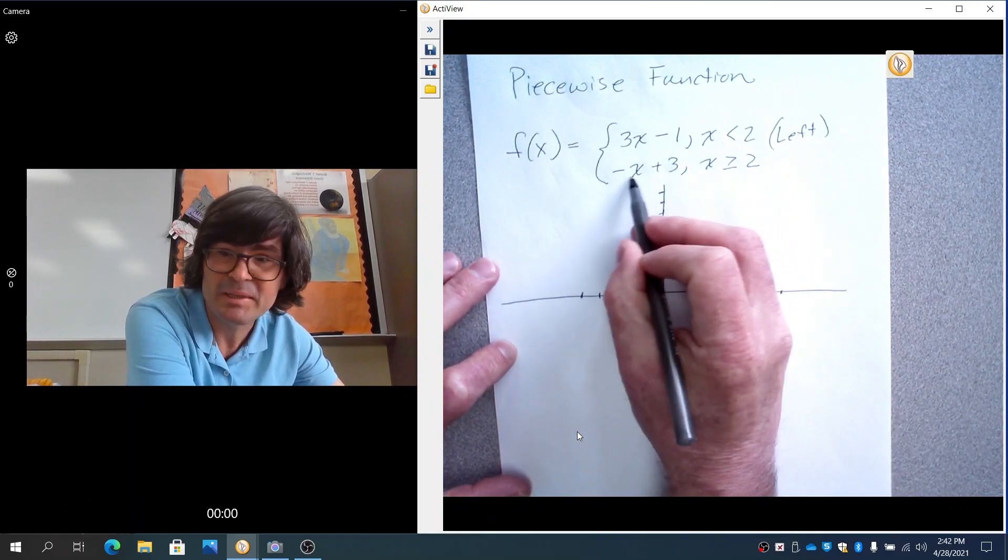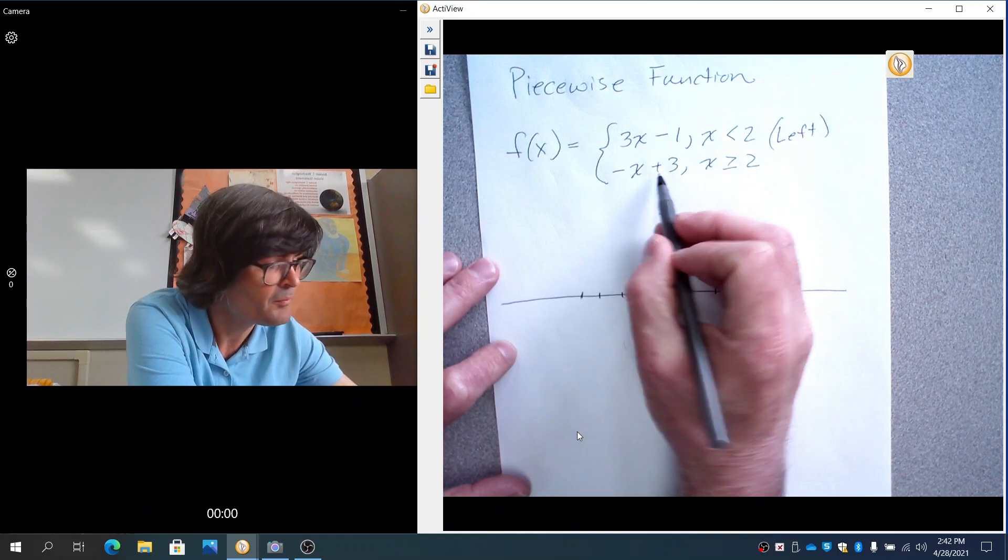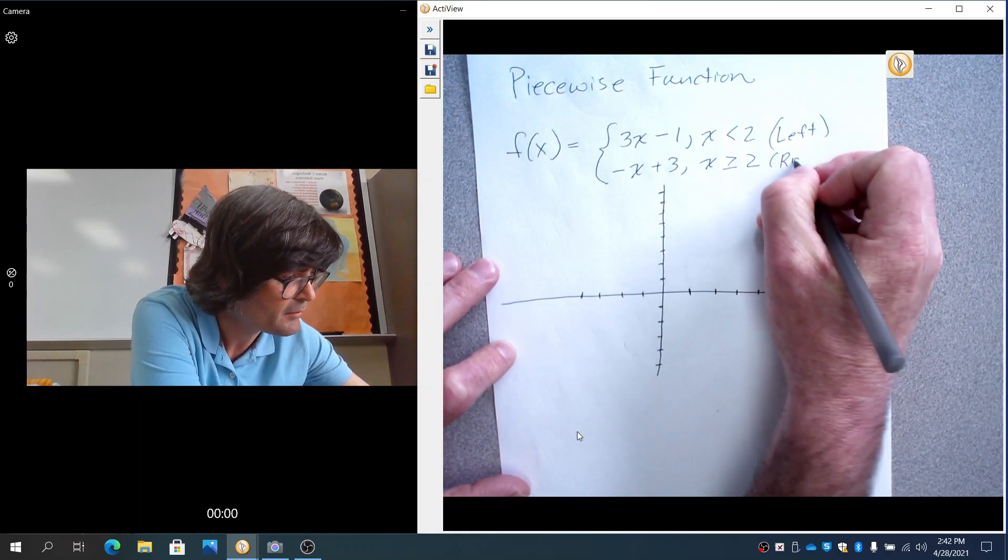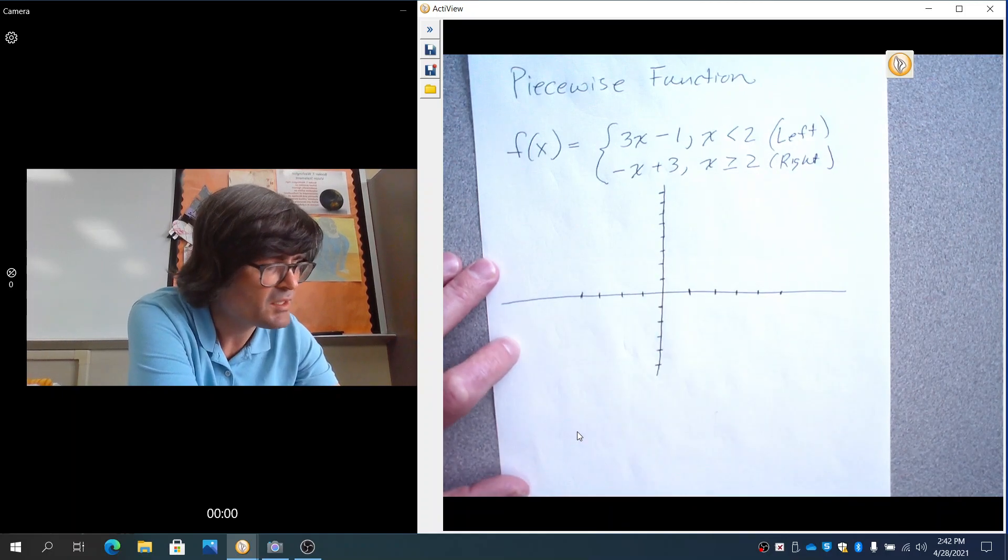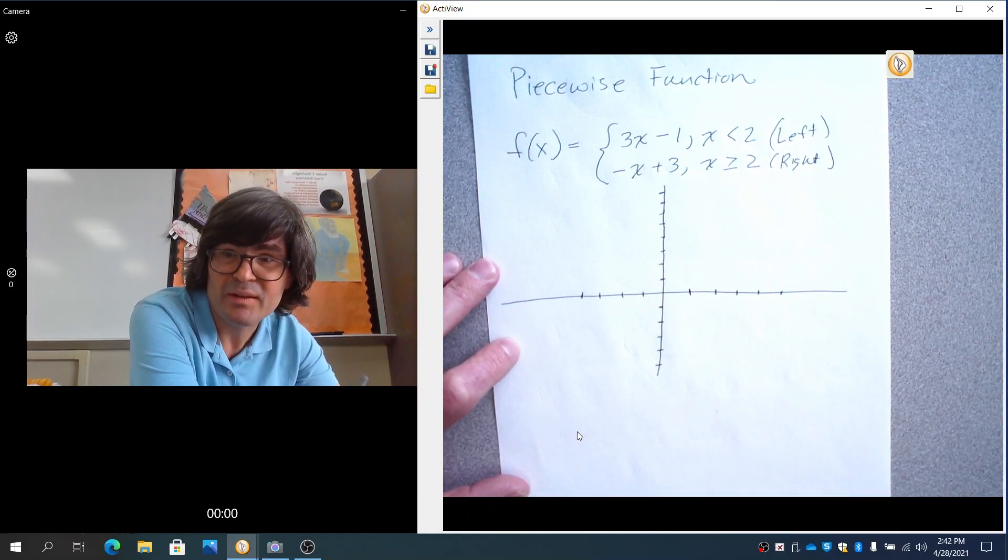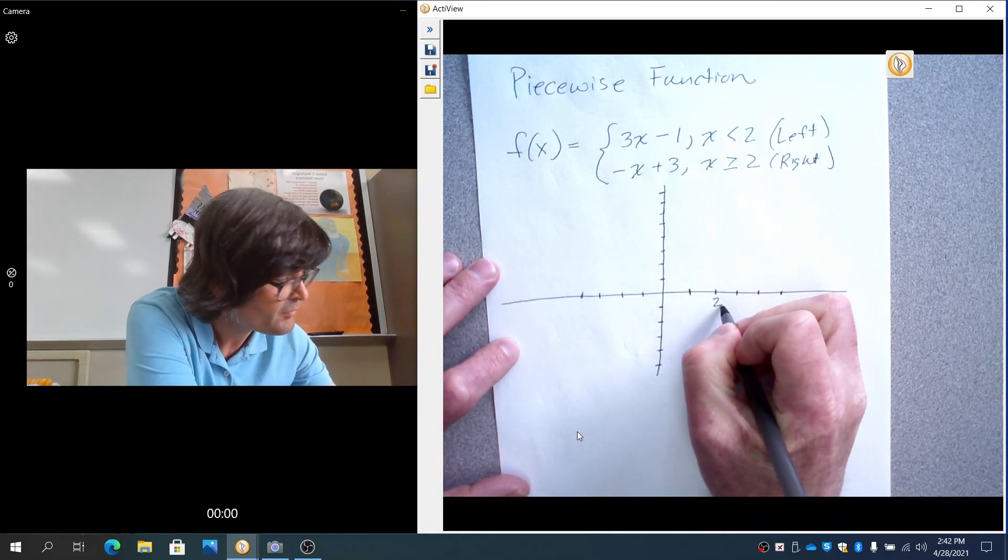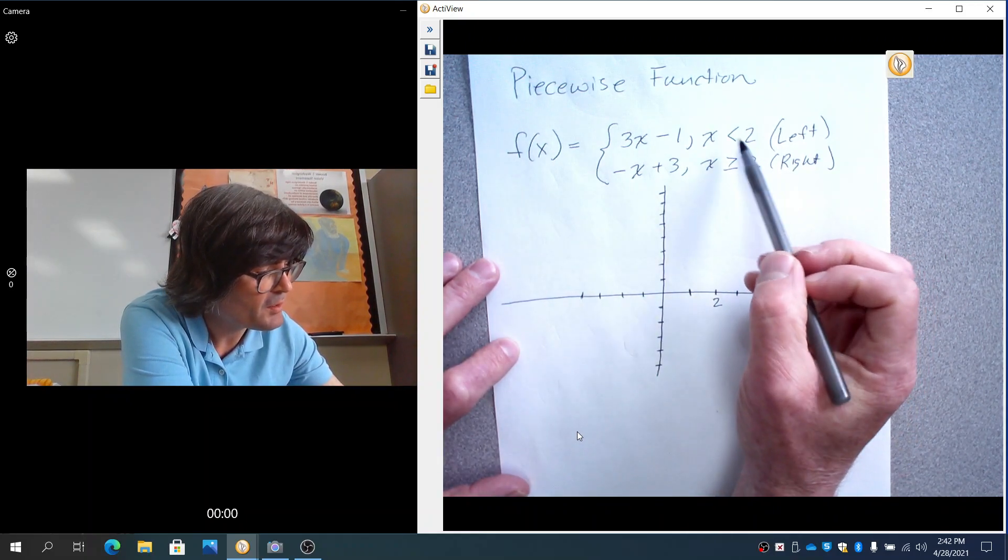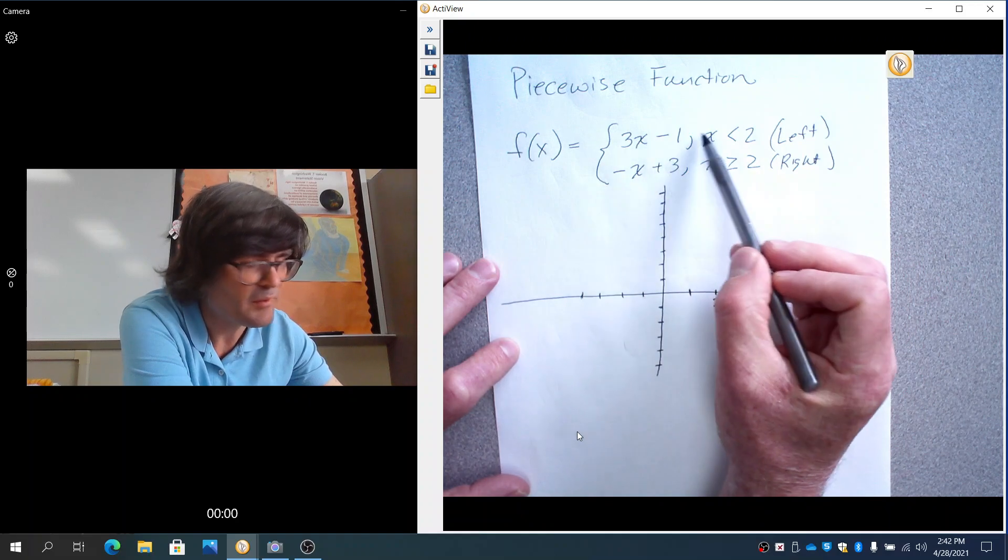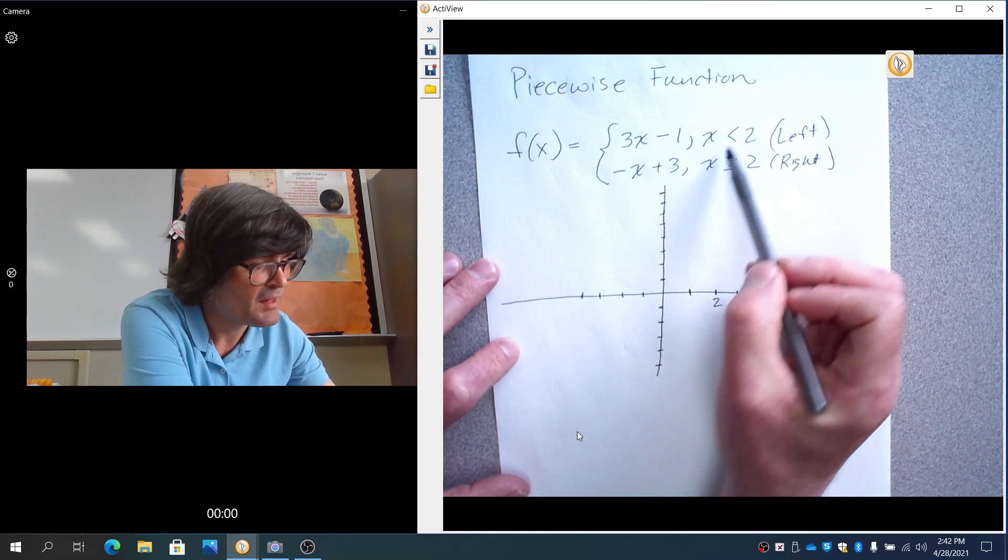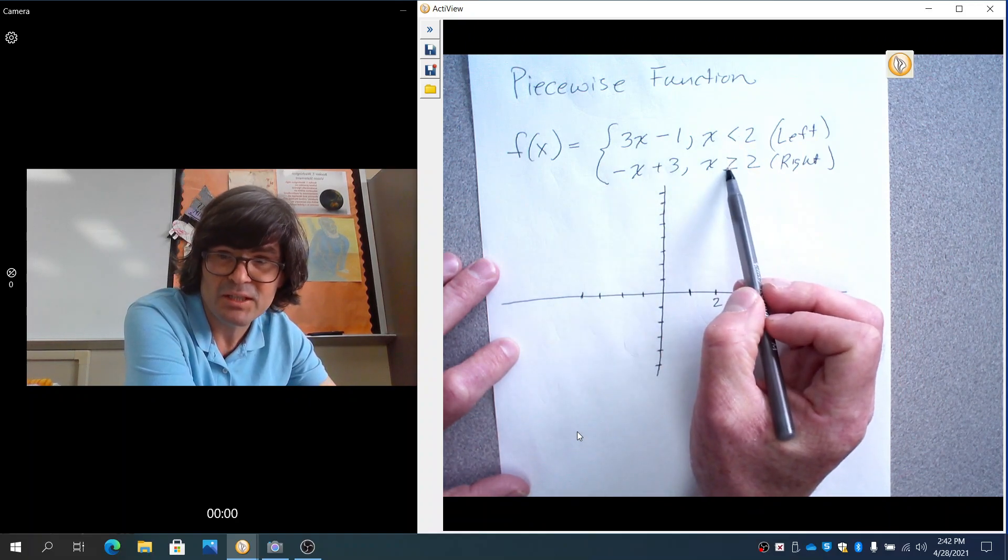And then here, for this piece, x is bigger than or equal to 2. I'm going to label this as right. And so the way I start graphing this is I start at the transition value, which is 2, right here. And I'm going to notice that this graph ends right before 2 with the less than, then it starts right on 2 and continues to the right.